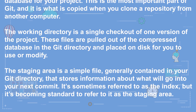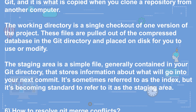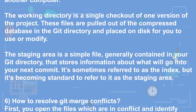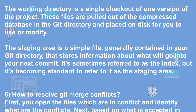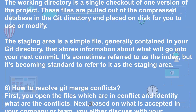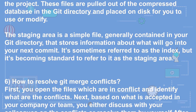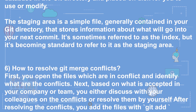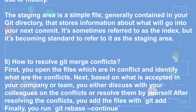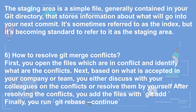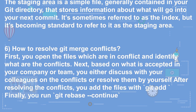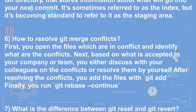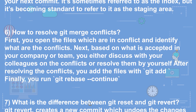Question 6: How to resolve git merge conflicts? First, open the files which are in conflict and identify the conflicts. Next, based on your team's guidelines, either discuss with colleagues or resolve them yourself. After resolving the conflicts, add the files with git add, and finally run git rebase --continue.